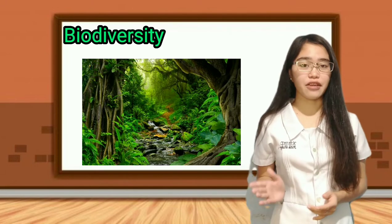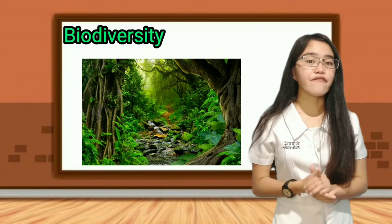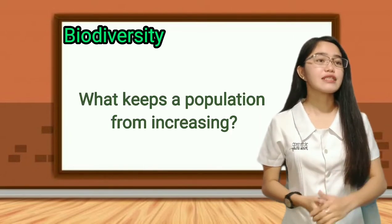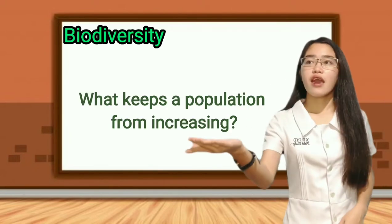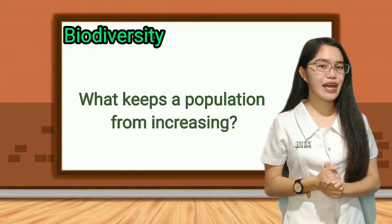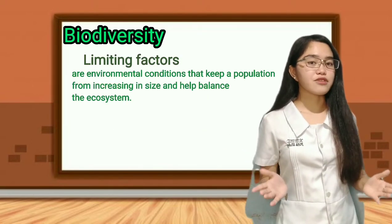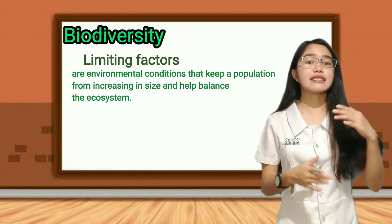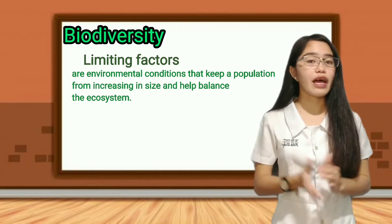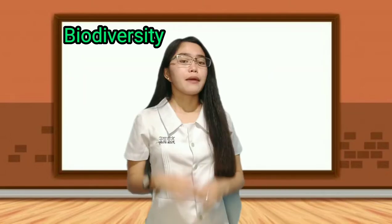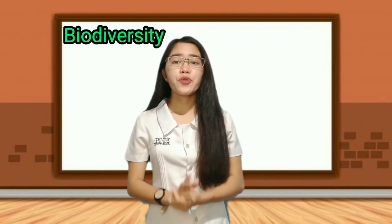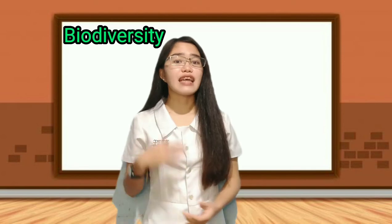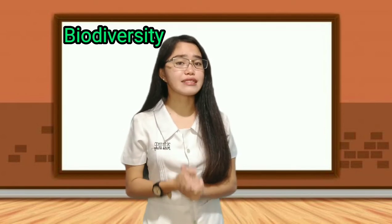A population of one kind may affect a population of another kind within the community. A jungle has a greater amount of biodiversity than a cornfield, because in a jungle community some populations such as ants, fungi, and ferns can be very large in number, while others such as tigers and snakes have fewer members. What keeps a population from increasing? Death? Environmental changes? Yes, that's all correct! Limiting factors are environmental conditions that keep a population from increasing in size, and they also help balance the ecosystem.